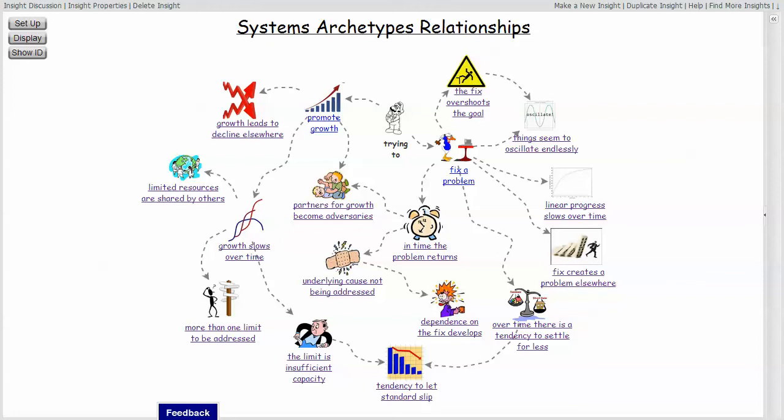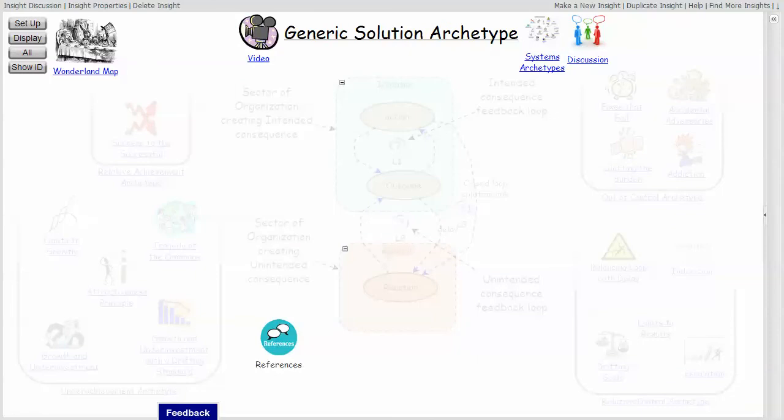Now that I've been through all of the common systems archetypes, which is probably enough to put almost anybody in overload, I'd like to spend a few minutes talking about work done by Eric Wolstenholm, who discovered that there is a commonality amongst the archetypes that isn't really obvious to begin with, which is probably why his work was so groundbreaking.